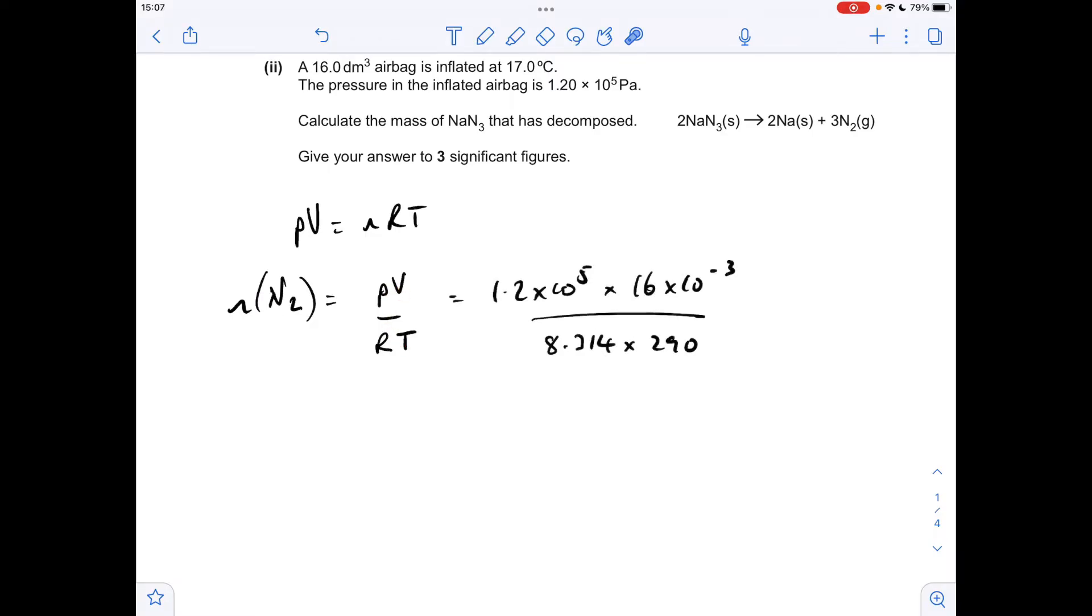Putting the numbers in: pressure in Pascals, volume in decimeters cubed times 10 to the minus 3 for cubic meters, divided by R which is 8.314, multiplied by temperature. Converting from degrees C to Kelvin by adding 273 gives us 290. Moles of nitrogen is 0.796, so moles of NaN3 is two-thirds of that, 0.531 moles. Using moles times MR, 0.531 times 65 gives 34.5 grams.